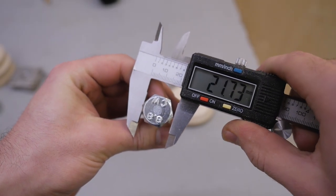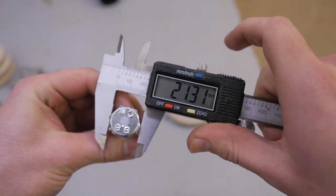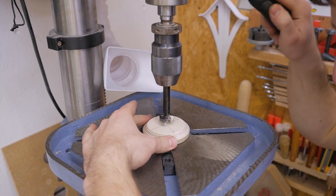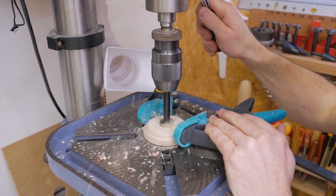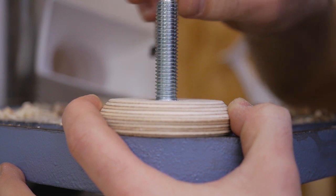Next we need to measure the bolt head from corner to corner and such a drill bit that is a little bit bigger than that. In my case it's 22 millimeters and with that I now drill a hole into the foot. The hole needs to be as deep so that the full head of the bolt is sunken in.